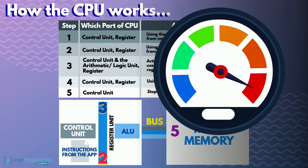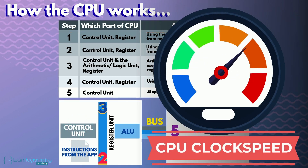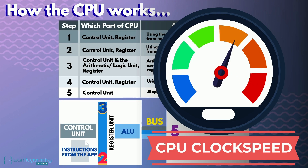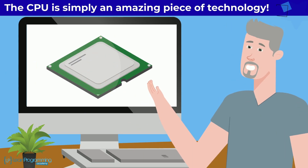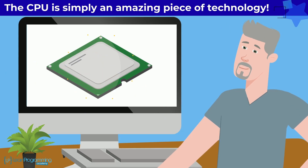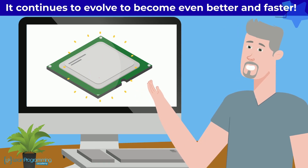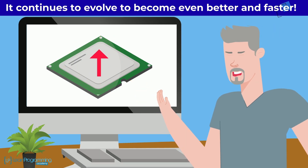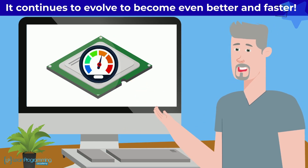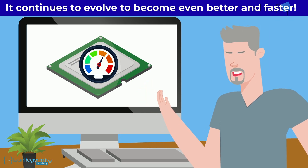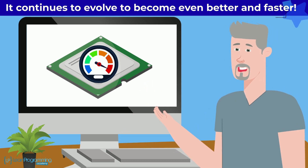You may have heard of CPU clock speeds. The clock speed is what determines the timing in which the control unit does each of its actions. The CPU is simply an amazing piece of technology. It continues to evolve to become even better and faster to keep up with consumers demanding that the computer do so much more than it used to do just a few years ago.